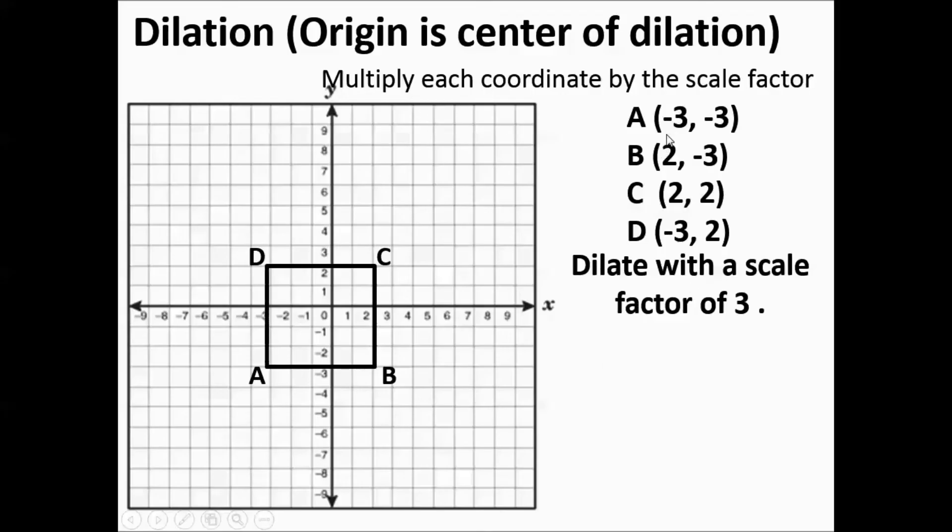So we're going to multiply negative 3 and negative 3 times 3. We're going to get the new point A being negative 9, negative 9. Point B, you go 2 times 3 is 6. Negative 3 times 3 is negative 9. You're going to have 6, negative 9. And so on. You're multiplying all of the ordered pairs by 3.